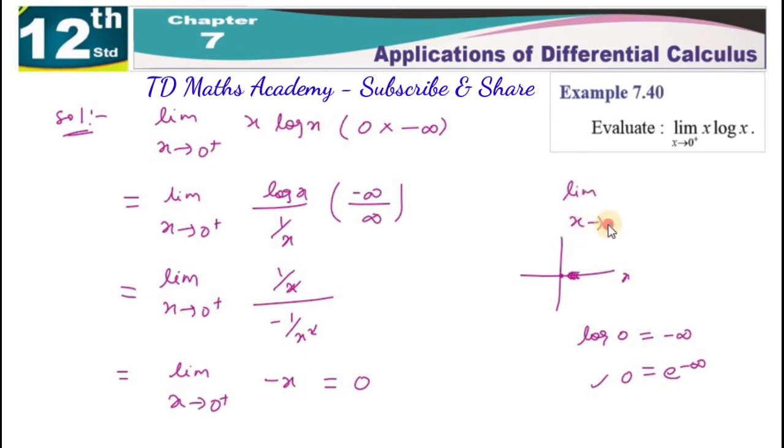Limit x tends to infinite, e power minus x. This is the function of e power minus x. X is infinite. So e power minus x value, where the value tends to what? The answer is 0. This is the actual method. This is the simple method. This is the function of e power minus x.